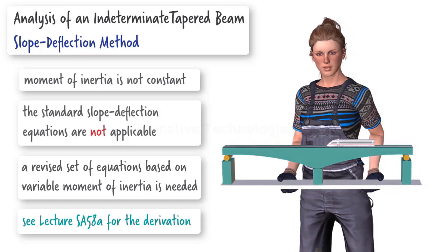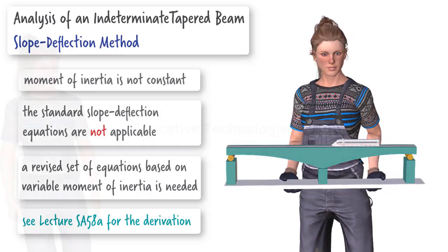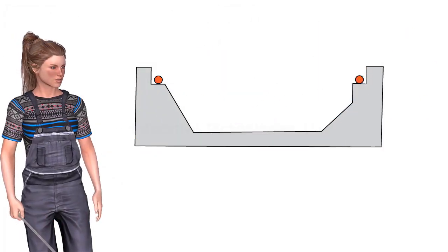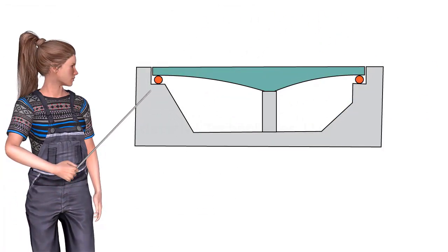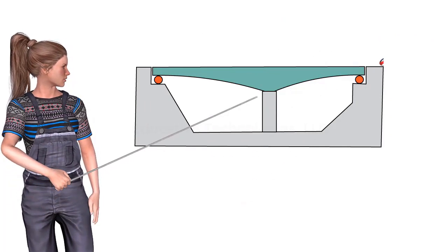In this lecture, I'm going to show how the revised equations can be used to analyze the bridge. Our tapered beam rests on a roller support at each end and is pin connected to the foundation in the middle of the bridge.